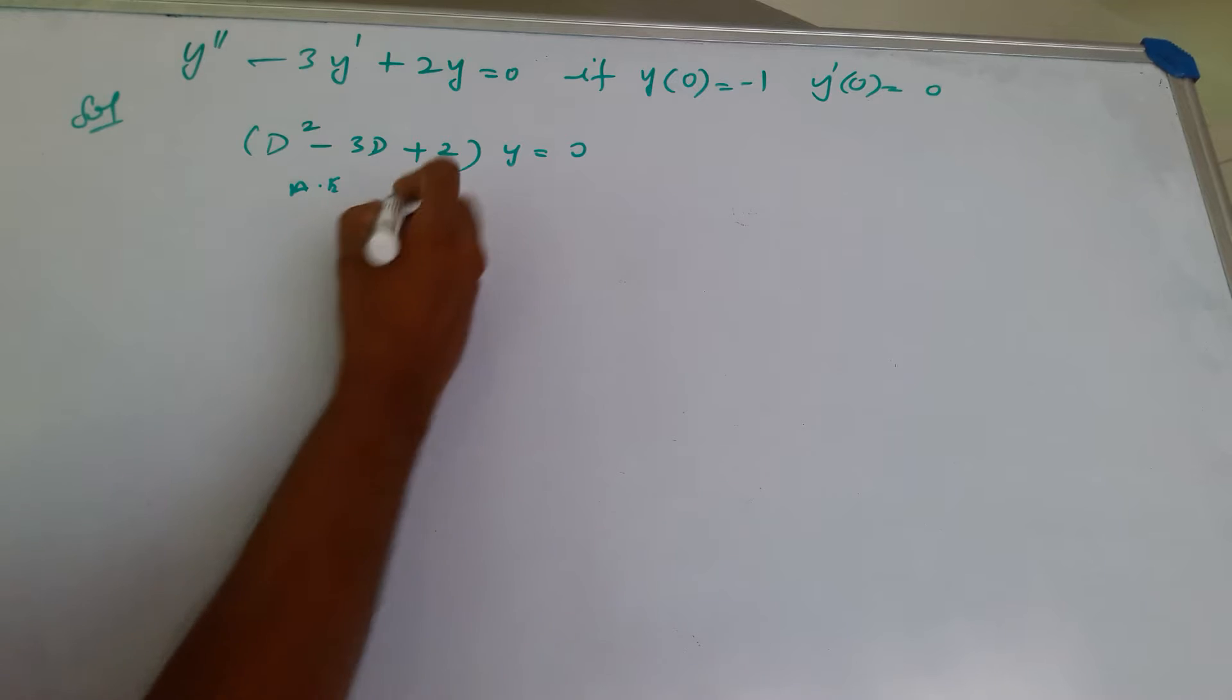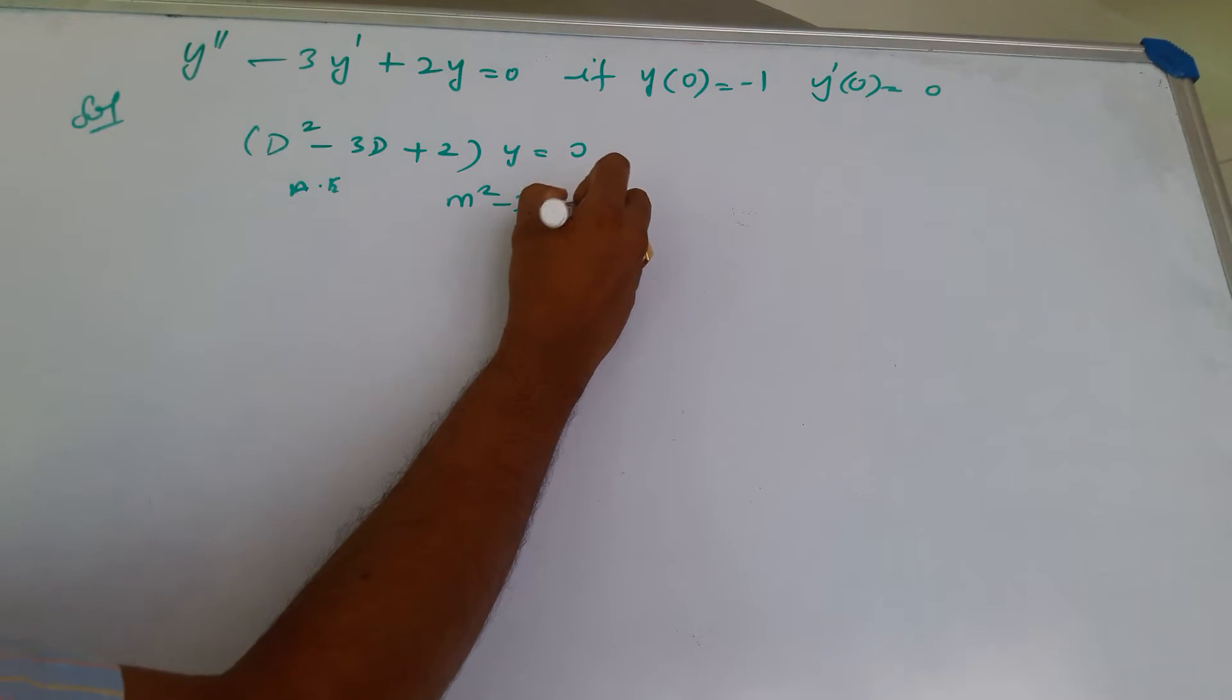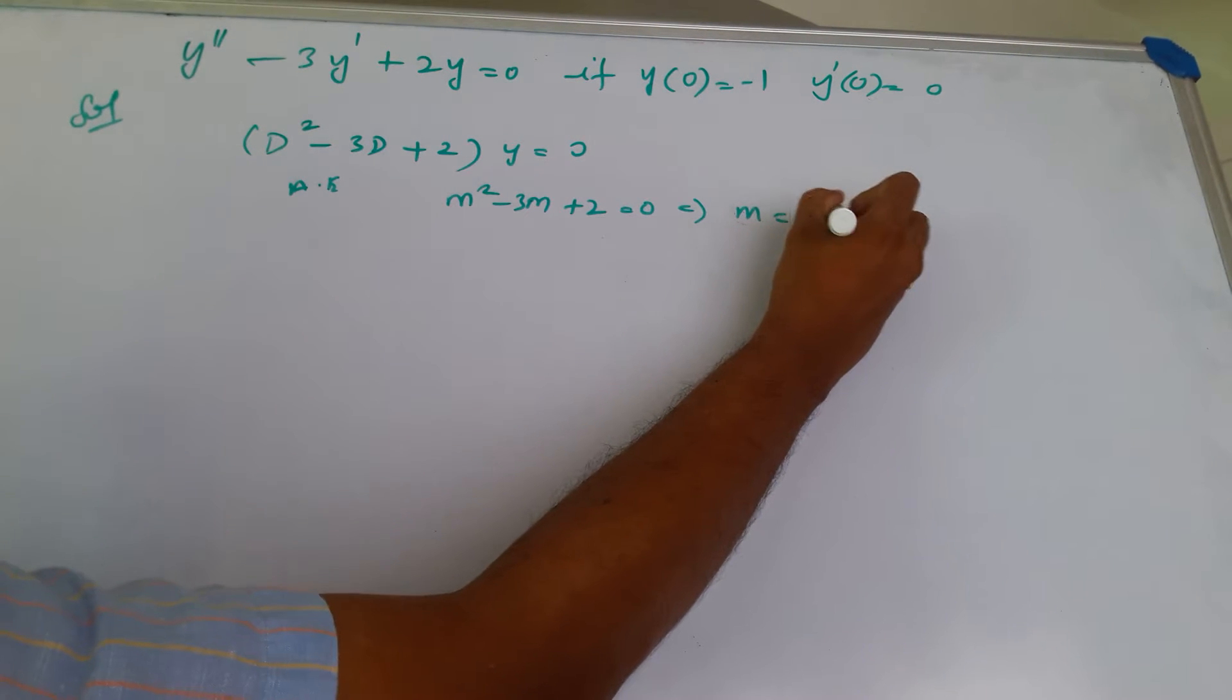The auxiliary equation corresponding to this will be m squared minus 3m plus 2 equals 0. So the roots are m equals 1 and 2.